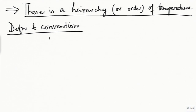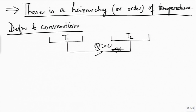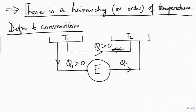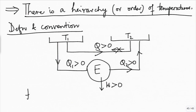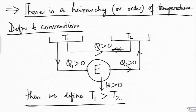Our definition would be: if I have two reservoirs and find that direct heat transfer takes place in one direction and not the opposite, and if I run a heat engine between the two, it works by absorbing heat from one reservoir and rejecting to the other while producing a positive amount of work — then we define T1 to be higher than T2. This is our definition of higher temperature and lower temperature. For this we require the Kelvin-Planck statement, and hence we require the second law of thermodynamics.